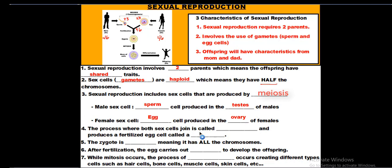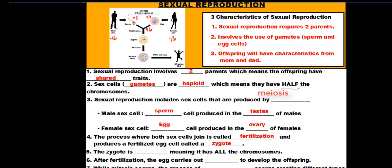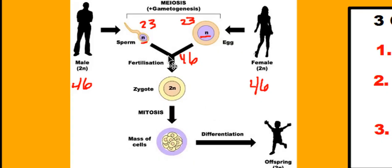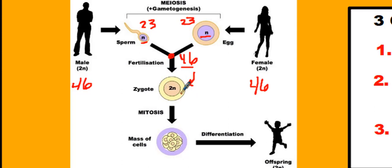The process where both sex cells join is called fertilization, and they produce a fertilized egg called a zygote. Zooming in on the diagram, we see the egg here and the sperm cell here — they meet at this point, which represents fertilization. The 23 chromosomes from dad and 23 chromosomes from mom combine to form 46, and those go into the zygote. The zygote is simply the fertilized egg.